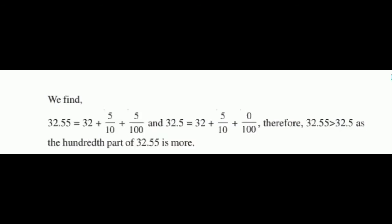We find 32.55 is equal to 32 plus 5 by 10 plus 5 by 100. Then 32.5 is 32 plus 5 by 10 plus 0 by 100. Therefore, 32.55 is greater than 32.5 as the hundredth part of 32.55 is more.